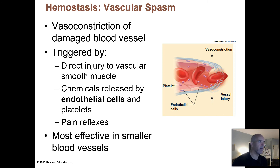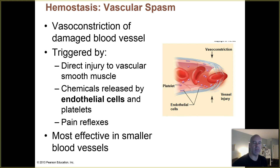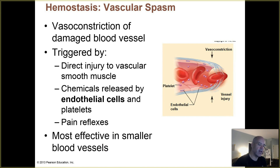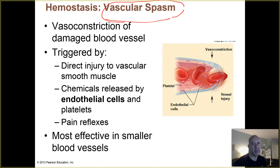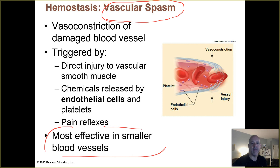The first step — which happens essentially immediately when you cut your skin open, ripping through many microscopic blood vessels — is vascular spasm. The smooth muscle cells within the walls of those small blood vessels contract, which helps partially close or reduce the diameter of that tear so you don't lose as much blood. This is most effective in smaller, microscopic blood vessels; if you rip open a major artery, vascular spasm won't do that much toward sealing off the injury.